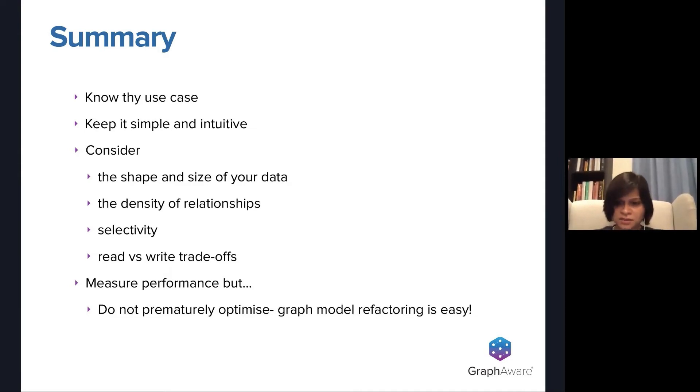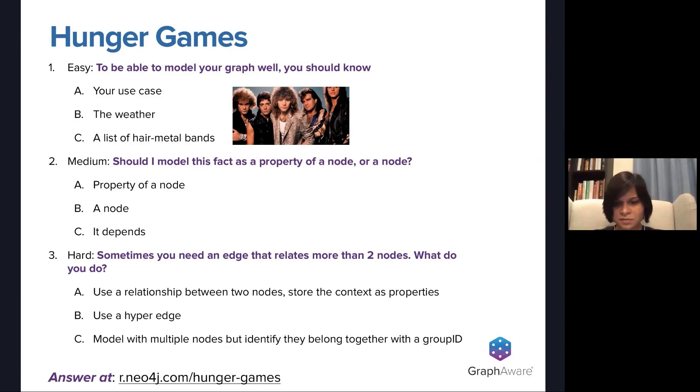So that's the end of my slides. And now I will move on to the Hunger Games. I would read the questions out to you. And there's a link at the bottom of the slides which tells you where to answer this. So the easy question is to be able to model your graph, you should know A, your use case. B, what the weather is. Or C, should you have a handy list of hair metal bands. Medium question. Should I model this fact as a property of a node or a node? A, a property of a node. B, a node. C, it depends. Question number three. Sometimes you need an edge that relates more than two nodes. So what do you do? A, use a relationship between two nodes and store the context as properties. B, use a hyperedge. C, model with multiple nodes, but identify that they belong together with a group ID.